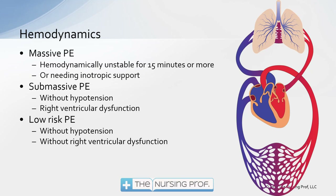When discussing hemodynamics in patients with pulmonary embolism, we break this into three categories. We have the massive PE, which is hemodynamically unstable — the clot is large enough in the lung vasculature that it decreases blood flow to the left heart, causes the right side to fail, and then the left side starts to fail. If that hemodynamic instability lasts 15 minutes or more, we call it a massive PE. This patient may need inotropic support and likely an invasive procedure to eliminate the PE.